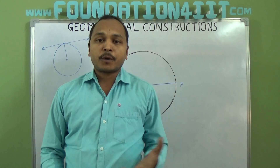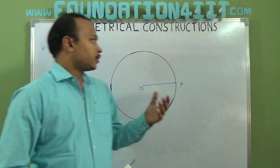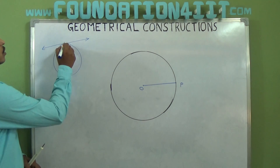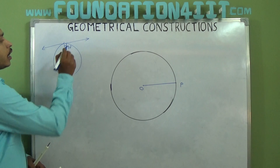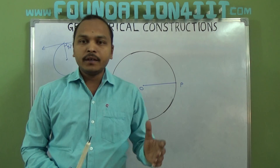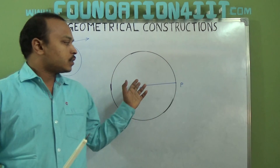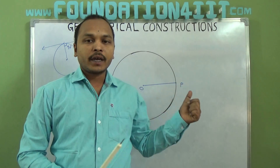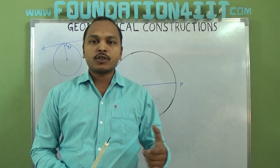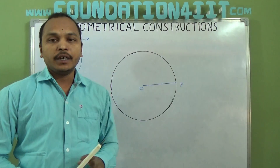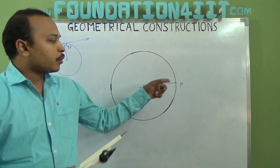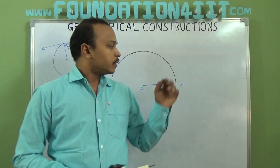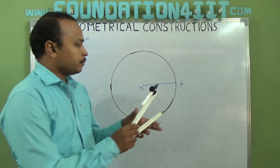To draw the tangent, we use the properties of the tangent. According to the property of tangent, the radius to the tangent is 90 degrees. The tangent is perpendicular to the radius at the point of contact. So at point P, if I draw a perpendicular line, we'll get the tangent.